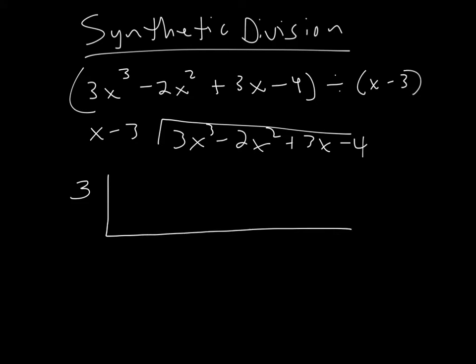And we're going to take the coefficients of the polynomial that we're going to divide into. We're going to take all the coefficients, 3, negative 2, 3, negative 4. We're going to ignore all the variables, all the x cubes and x squares and all that. We're just going to focus on the values themselves. And we're going to write those in order right here: 3, negative 2, 3, negative 4. And now we're set up to do this new method, this little trick method of division.